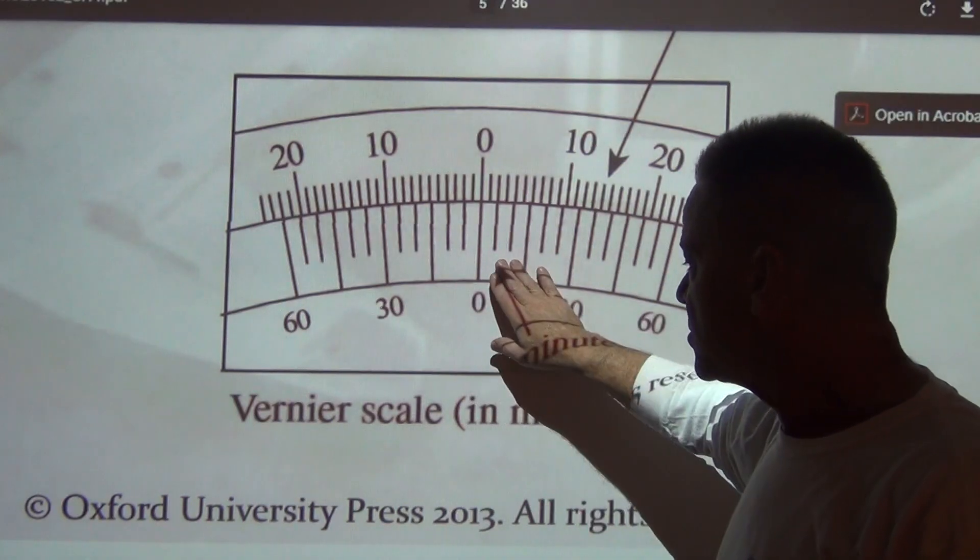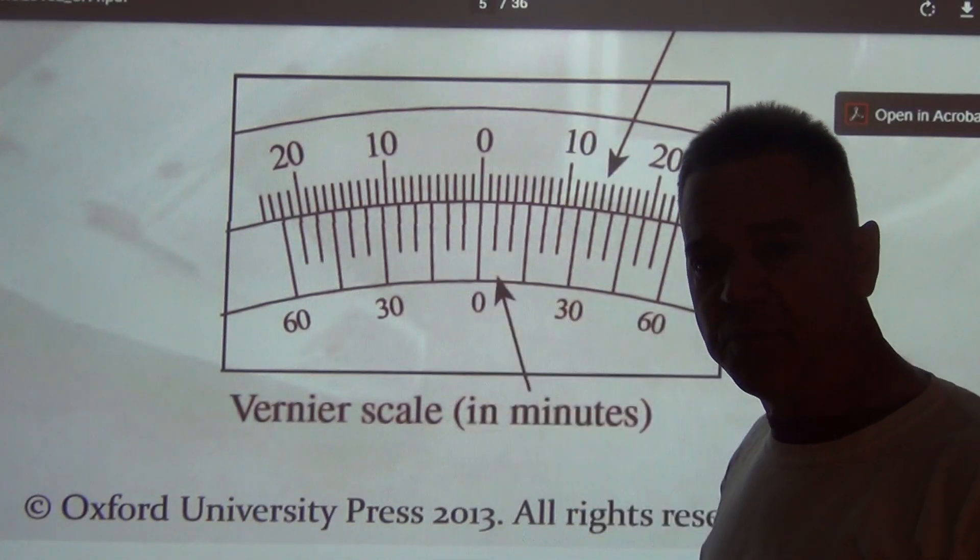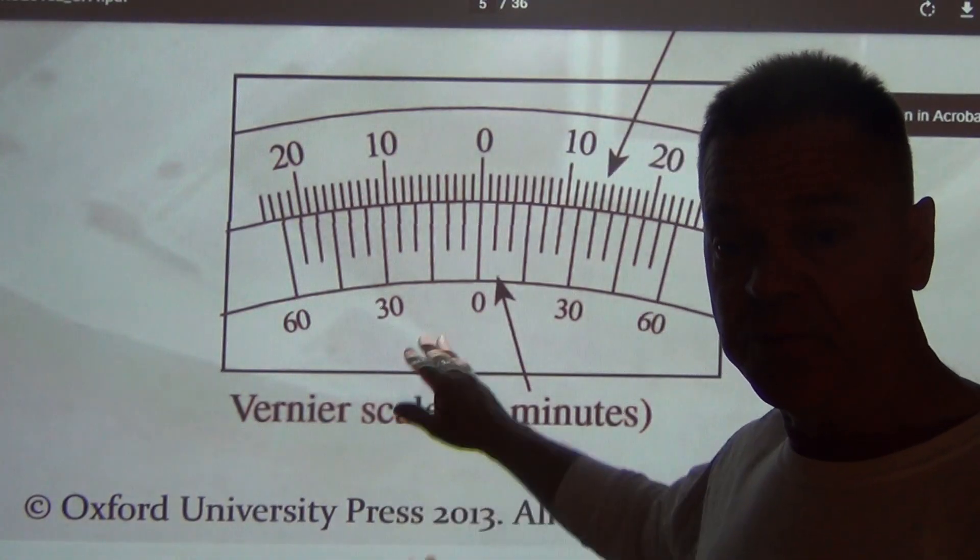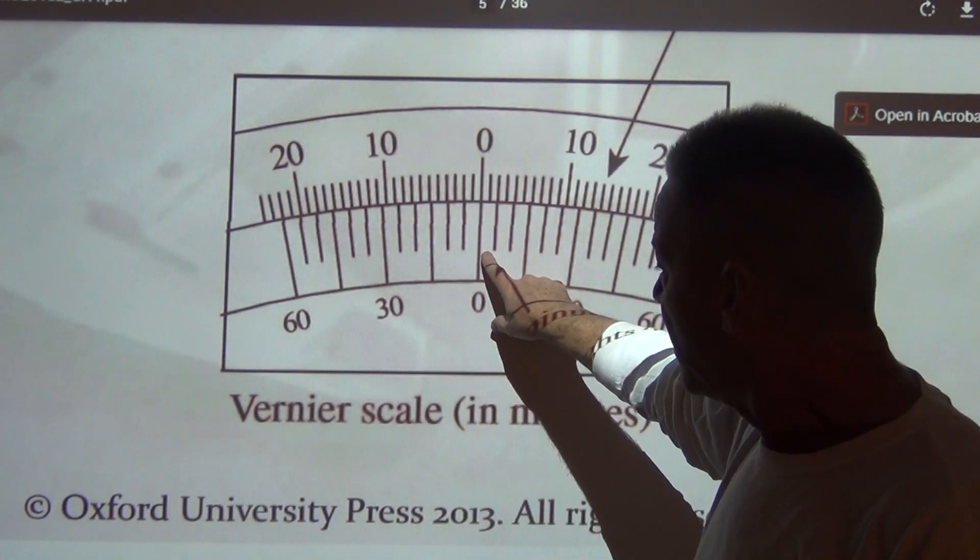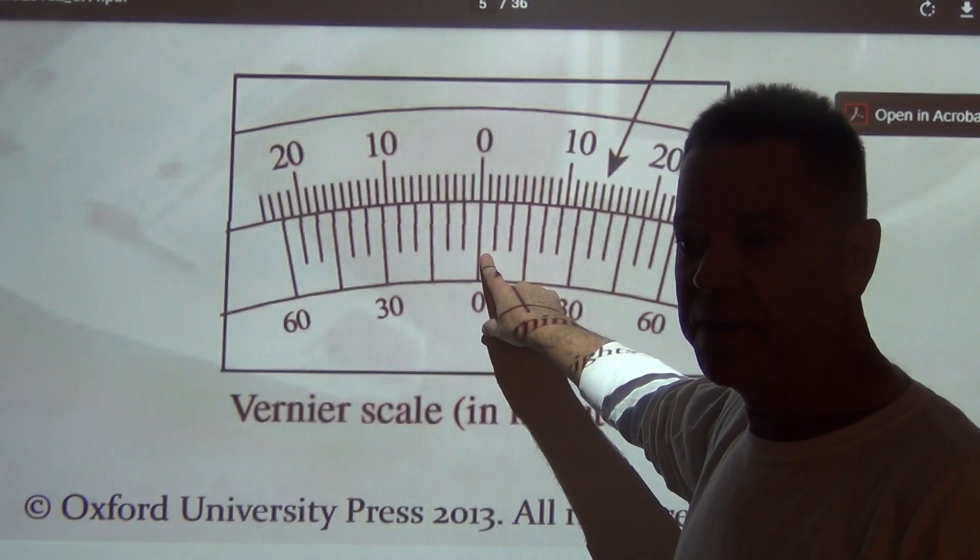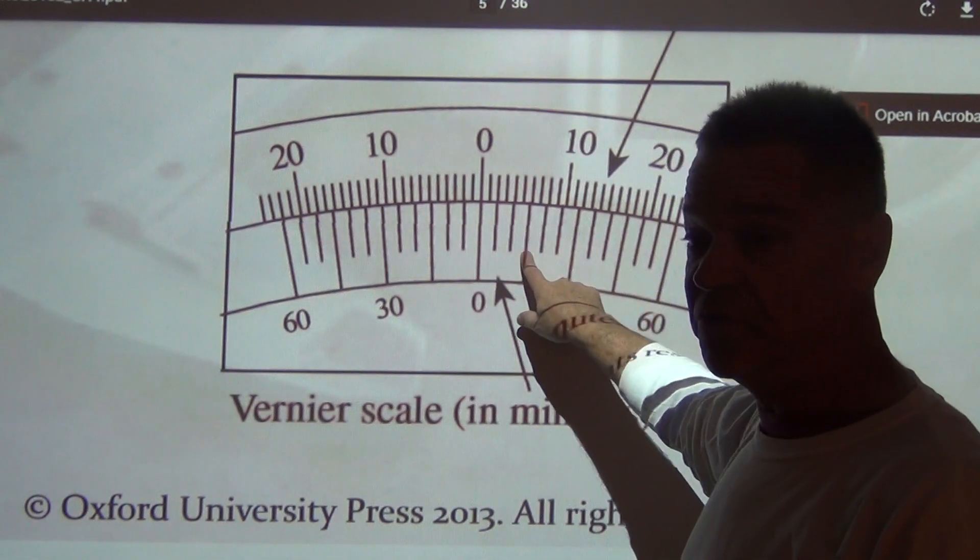And now this vernier scale won't give you measurements accurate to the single minute. It'll give you measurements accurate to the 5 minutes, right? Accurate to 5 minutes, right? Meaning 1/12th of a degree. And that's pretty good.